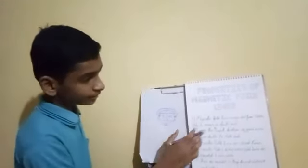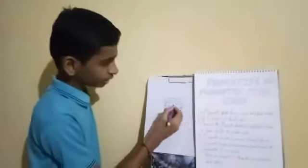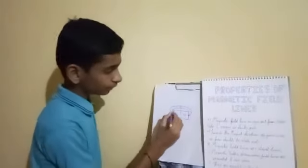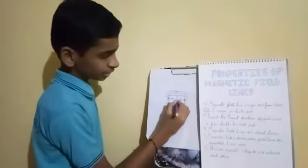Second property, inside the magnet, direction of field line is from South Pole to the North Pole. It means inside the magnet, the magnetic field lines are moving from the South Pole to the North Pole in this direction.